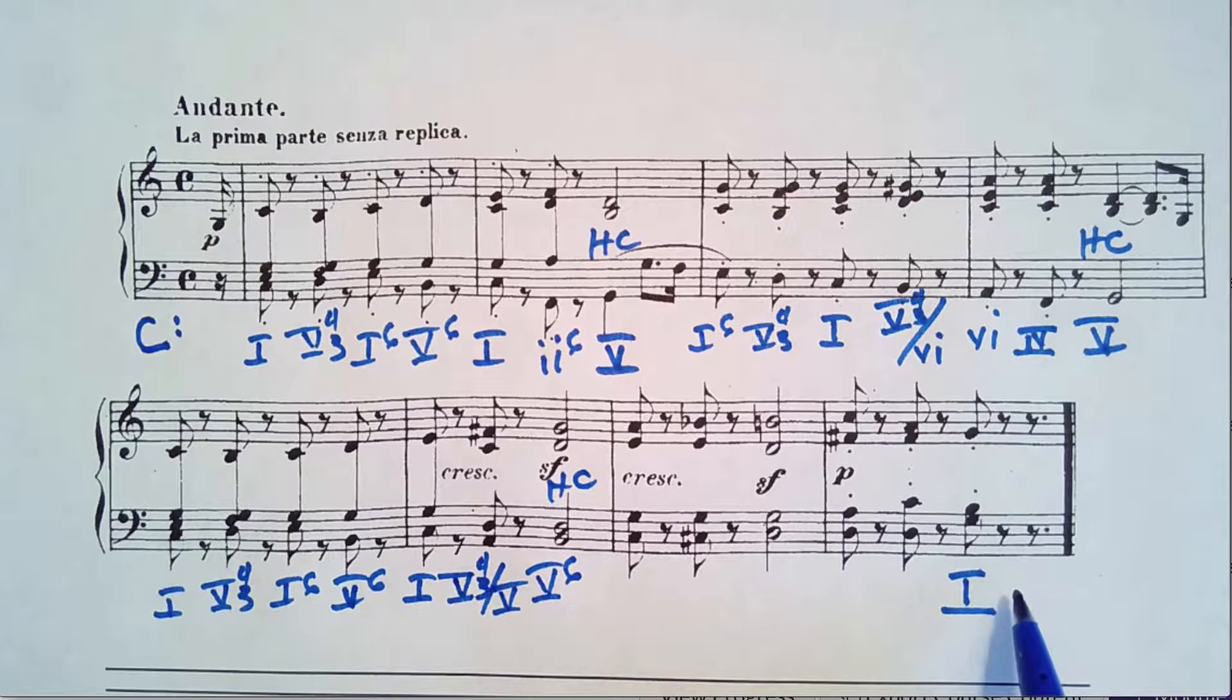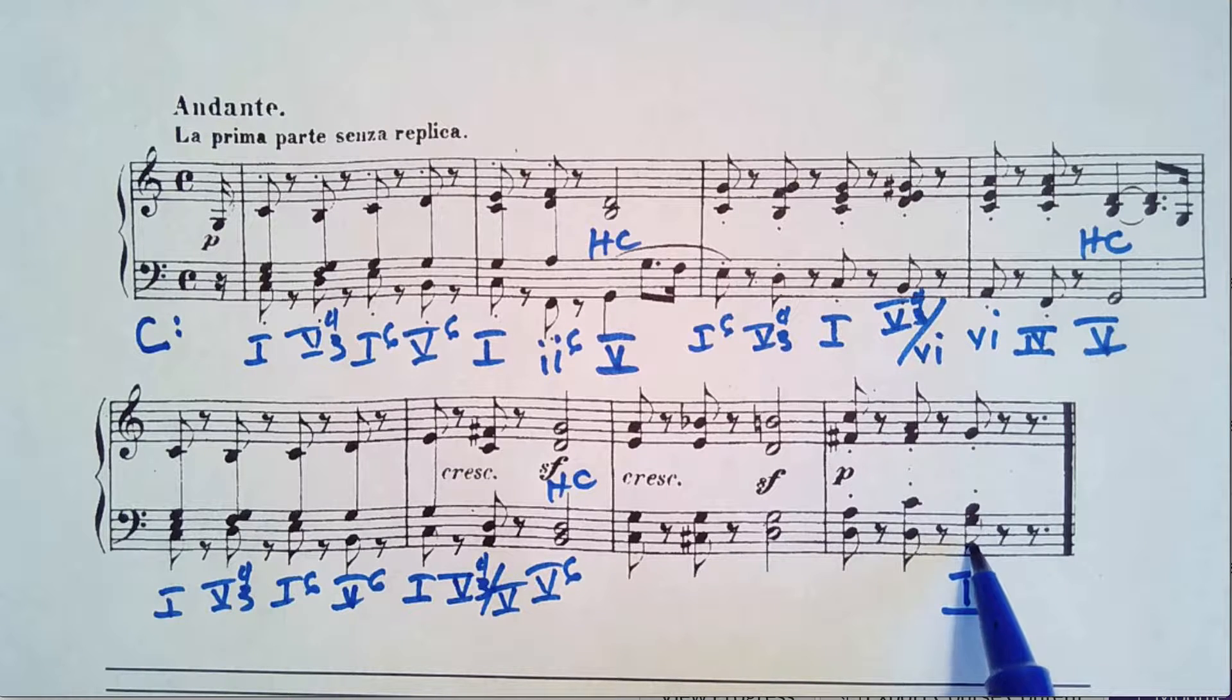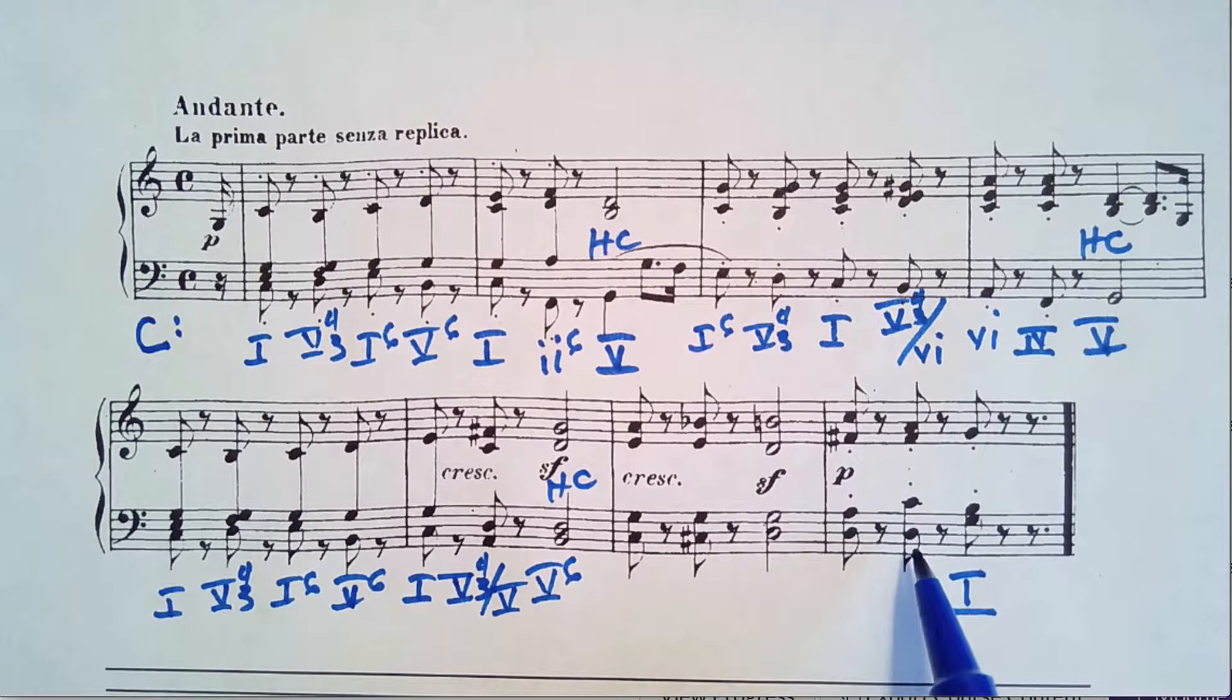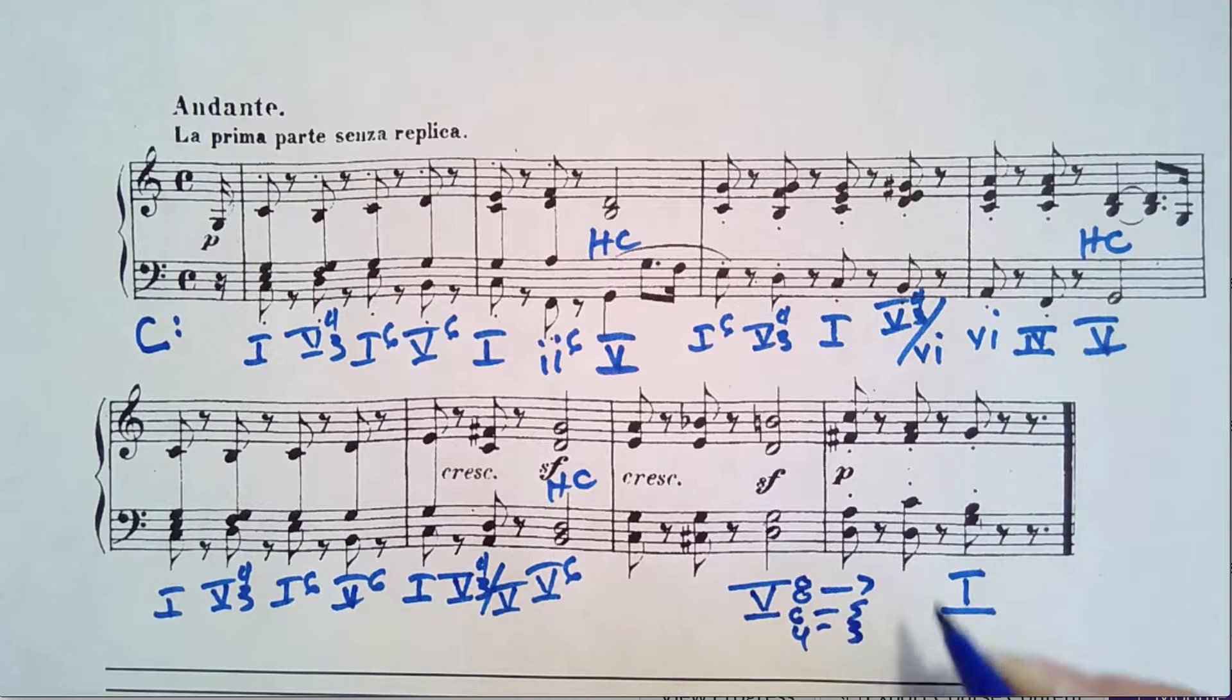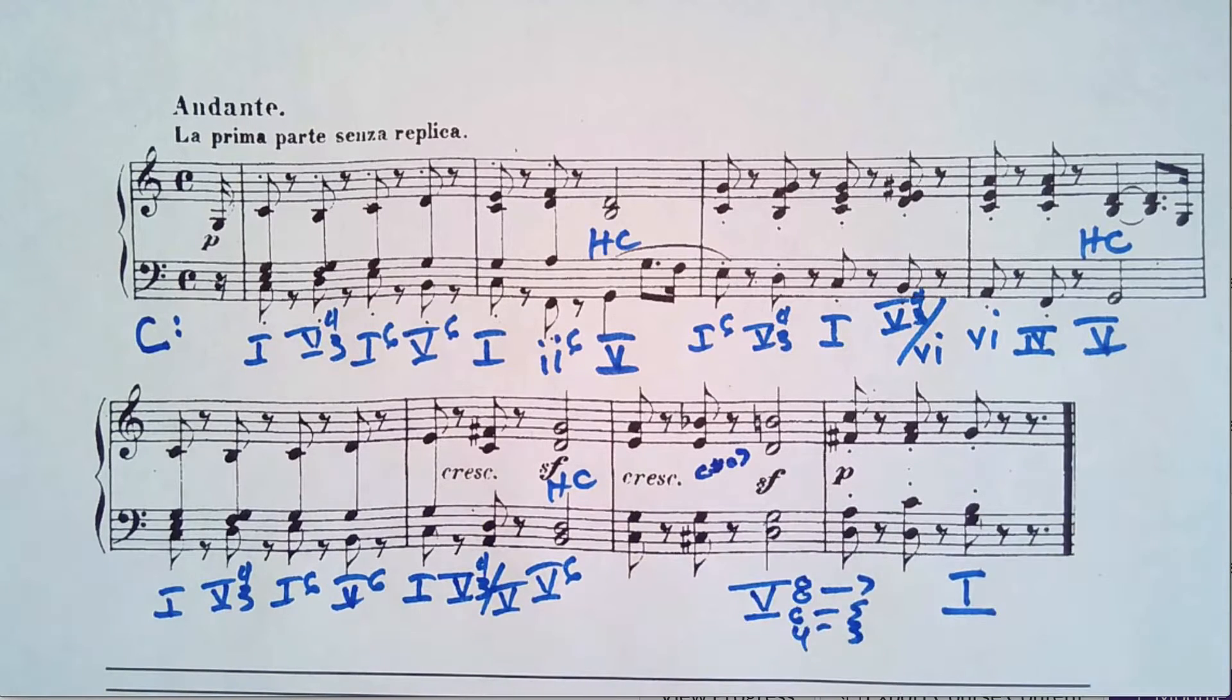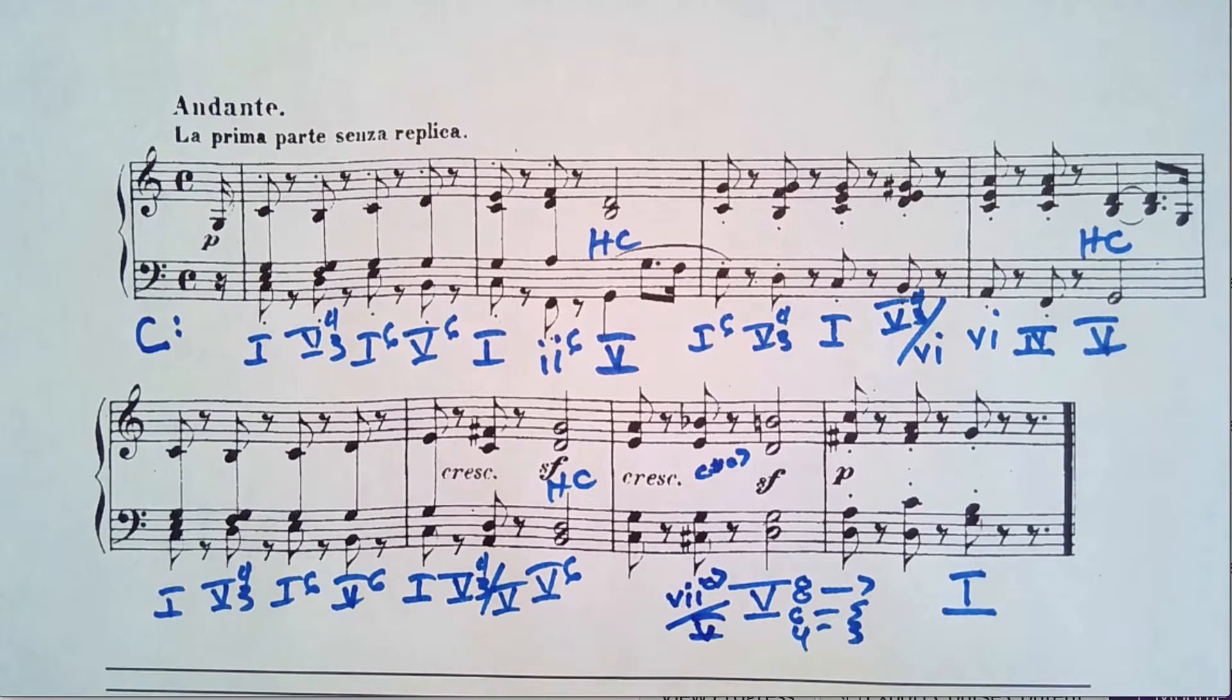Now we know that the next phrase modulates to the key of G. And we know that because F sharp enters, we go very strongly five to one in the key of G. And the one is strengthened through cadential six, four and seventh. So we know that all of this is five, eight, six, four, seven, five, three in the key of G. This chord right here is a C sharp, fully diminished seventh chord. The purpose of that chord is to lead this to this five chord. So this is seven, diminished seven of five in the key of G.